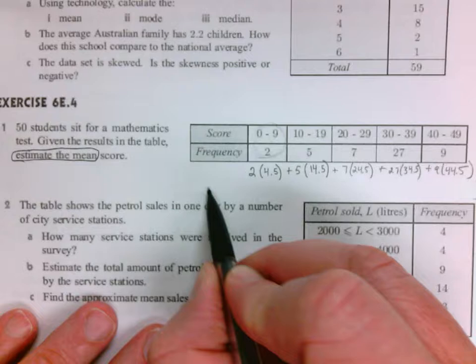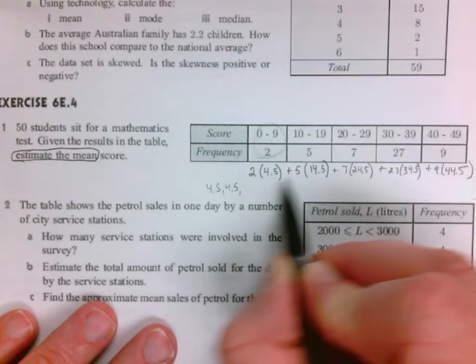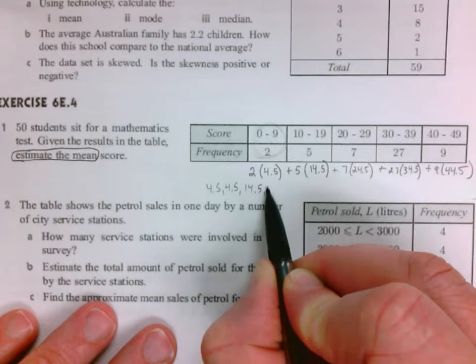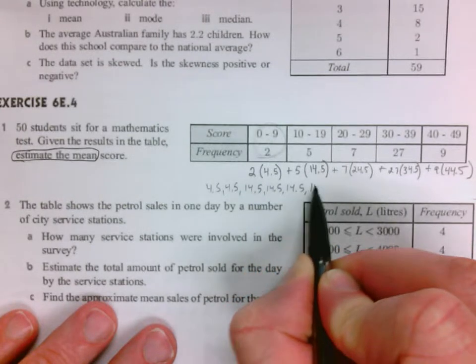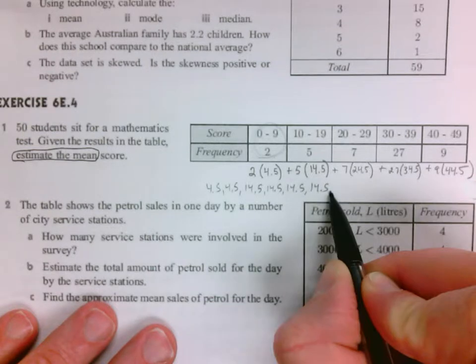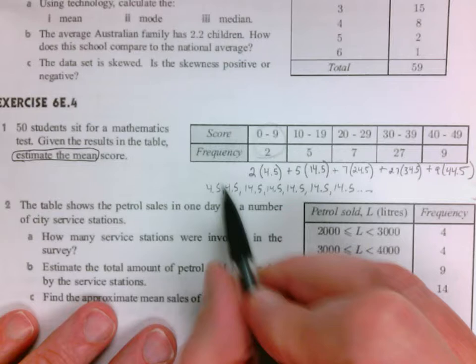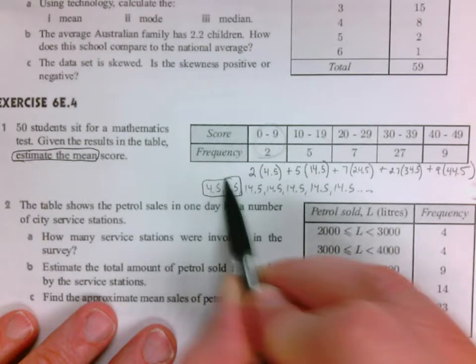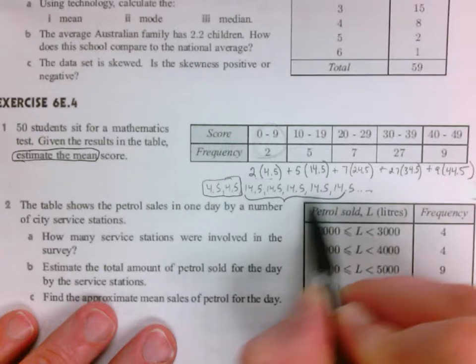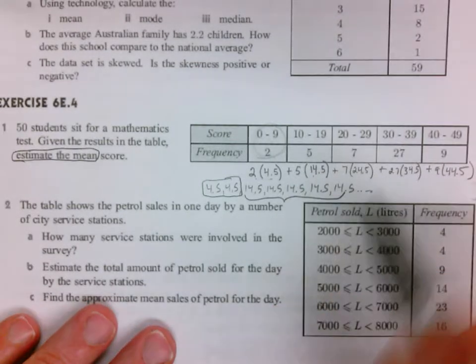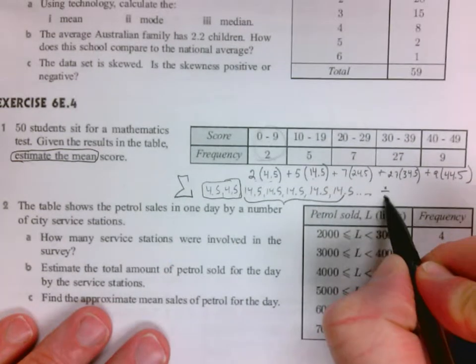Some people get confused when I do this and try to memorize the process. Think about this as a list of 50 numbers. We're going to assume the first one's 4.5, the second one's 4.5, the next one's 14.5, 14.5, 14.5, 14.5—so we have five of those. You could keep listing all 60, but pretty quickly you realize this is why I multiplied that by 2, this is why I multiplied this by 5. When I add all these up, I get that sum, divide by 50, and that gives you my average.